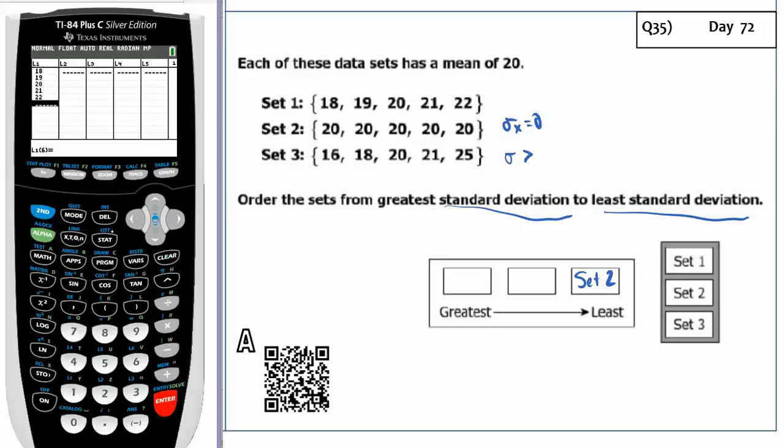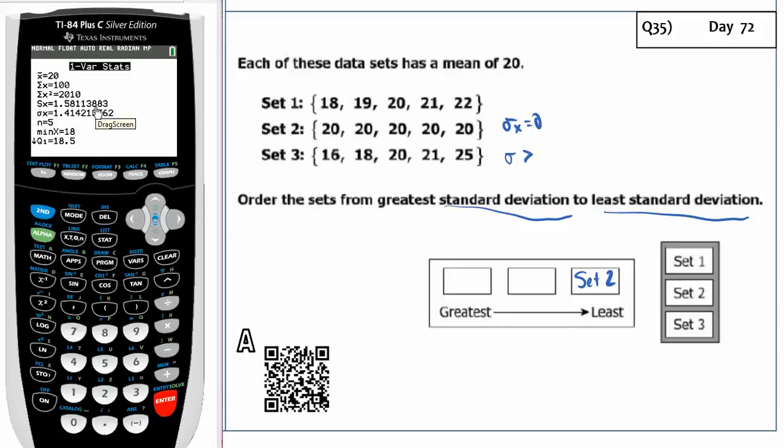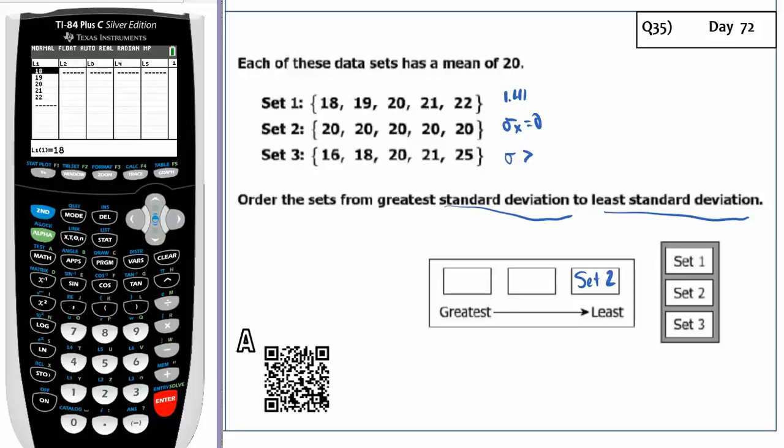And I threw the first set in here. I'm going to go stat and calculate, one variable statistics, down to calculate. I'm going to find out what my standard deviation is. Standard deviation over here is 1.41. Then I'm going to go back to stat and go to edit. I'm going to put the other numbers in. I'll do the 20s, 20, 20, 20, 20, and 20. And I'm going to go stat, calc, one variable statistics. Find out what the standard deviation of that is, which is 0. It says right there. So I was right.